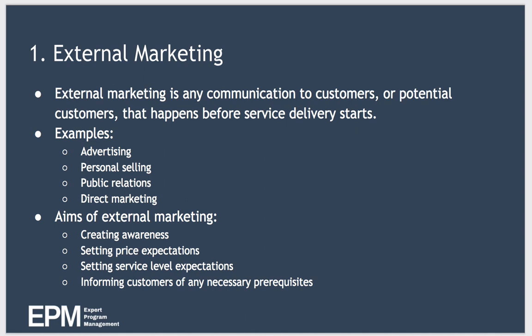Companies use external marketing to make promises to customers. External marketing is any communication to customers or potential customers that happens before service delivery starts. Forms of external marketing include advertising, personal selling, public relations and direct marketing. We can use external marketing to achieve many aims including creating awareness of our service, setting price expectations, setting service level expectations and informing customers of any prerequisites that must be in place before they can use the service.